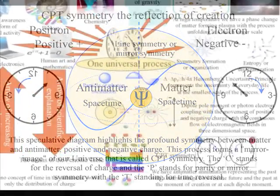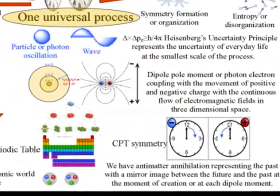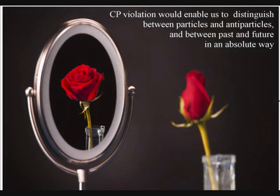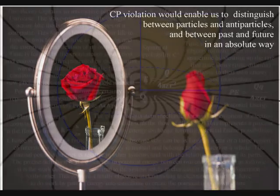In the lower right of the diagram, we see this as symmetry forming and breaking in the form of anti-matter annihilation representing the past, with a mirror image between the future and the past at the moment of creation or at each dipole moment.